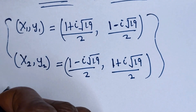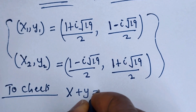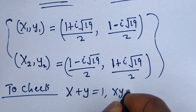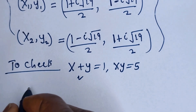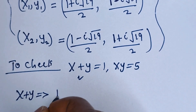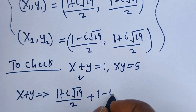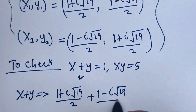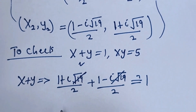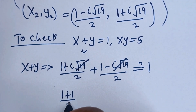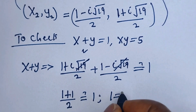These are the final answers. We may check to confirm if they are correct. We have the given equations: S plus Y equals 1, and S times Y equals 5. Let's check S plus Y using S1 and Y1: (1 plus i√19) over 2 plus (1 minus i√19) over 2. The i√19 terms cancel, leaving (1 plus 1) over 2, which is 2 over 2, equals 1. Confirmed.